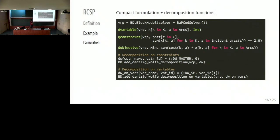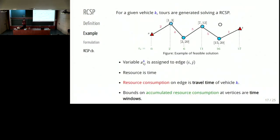For a given vehicle k, we can generate tours by solving an RCSP. First, we split the depot into two nodes: the source s and the sink t, so the path becomes a tour. We assign the variable x_k_ig to the edge ig. If this edge is used in the pricing solution, the variable linked to it will be equal to one. The resource is time: the resource consumption on edges is the travel time, and the bounds on accumulated resource consumption at vertices are the time windows. For instance, the third customer is visited at time 11, which is within its time window. We instantiate the network, which has NB nodes — the first node is the source and the last is the sink. We define the resource properties of vertices: the bounds on accumulated time consumption are the time windows. Then we instantiate the edges; for example, when we add edge C1→C2, we attach the variable x_k_C1_C2 and define its time consumption as the travel time between C1 and C2.